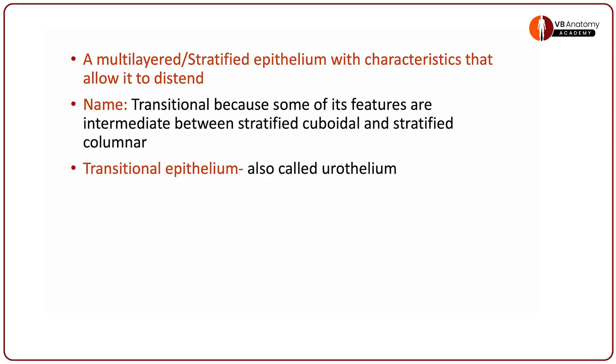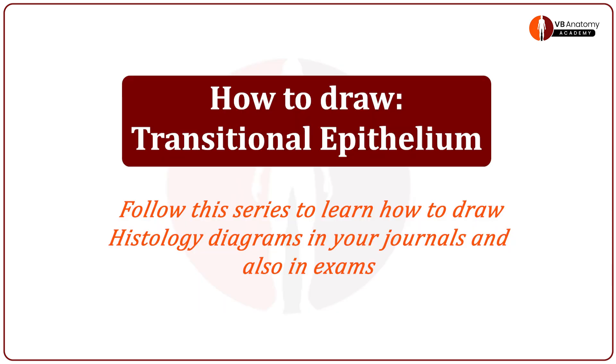Why is it called urothelium? Because you always find it in the urinary system. You find it in the pelvic calyceal space, minor calyx, major calyx, in the ureter, in the urinary bladder and in the proximal urethra. With this much basic let us begin to draw this transitional epithelium.